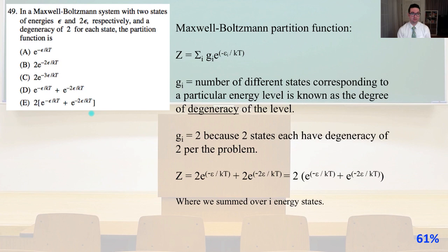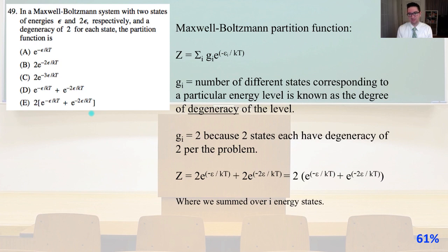Problem 49. In a Maxwell-Boltzmann system with two states of energies E and 2E respectively, and a degeneracy of two for each state, what is the partition function? The Maxwell-Boltzmann partition function is Z = sum over i of g_i * e^(-E_i / kT), where g_i is the degeneracy. Since g_i = 2 for both states, Z = 2e^(-E/kT) + 2e^(-2E/kT). That is answer E.